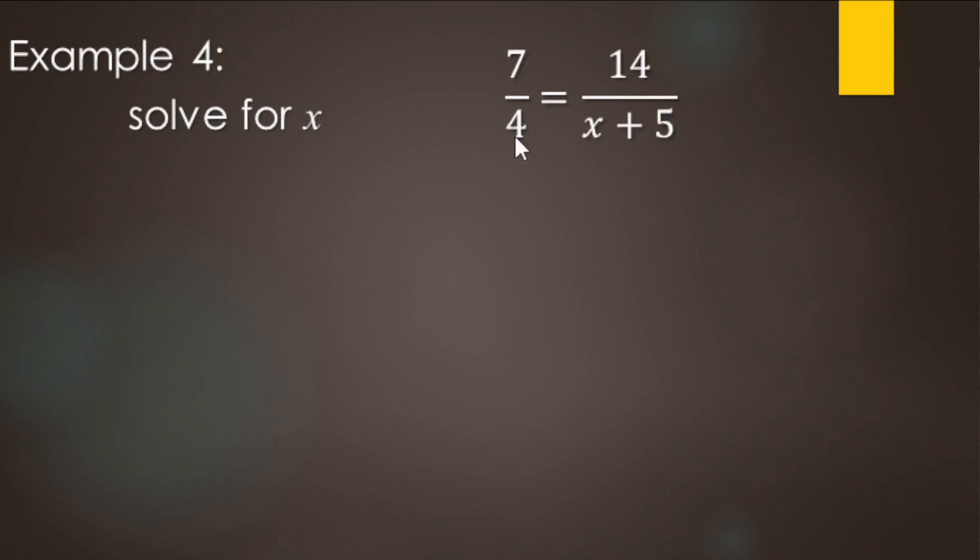So solving 7 over 4 equals 14 over x plus 5. Here we go. We're going to start doing the cross multiply step. So we're going to have 7 times x plus 5. This is going to be parentheses style multiplication or distributive style multiplication. And then 4 times 14 is just regular multiplication.